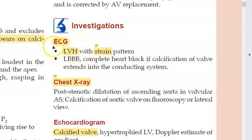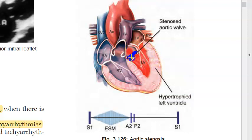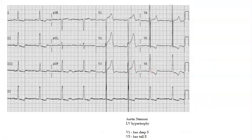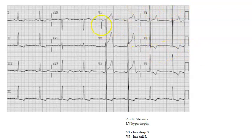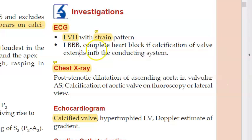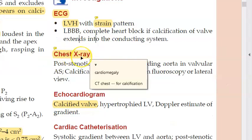On ECG in aortic stenosis, you will see left ventricular hypertrophy. In V1 there is a deep S wave, and in V5 there is a tall R wave, indicating left ventricular hypertrophy. There is also an LV strain pattern — because the hypertrophied heart has increased oxygen demand, there can be T-wave inversion.